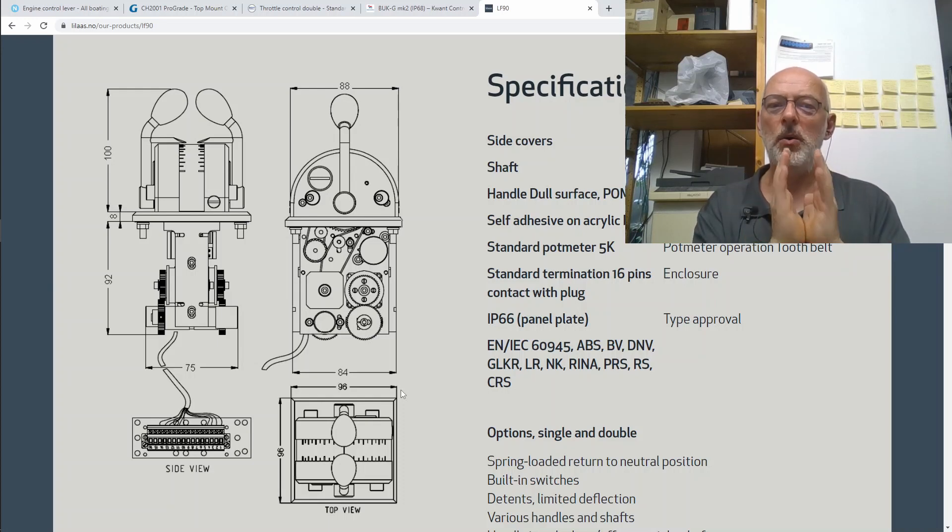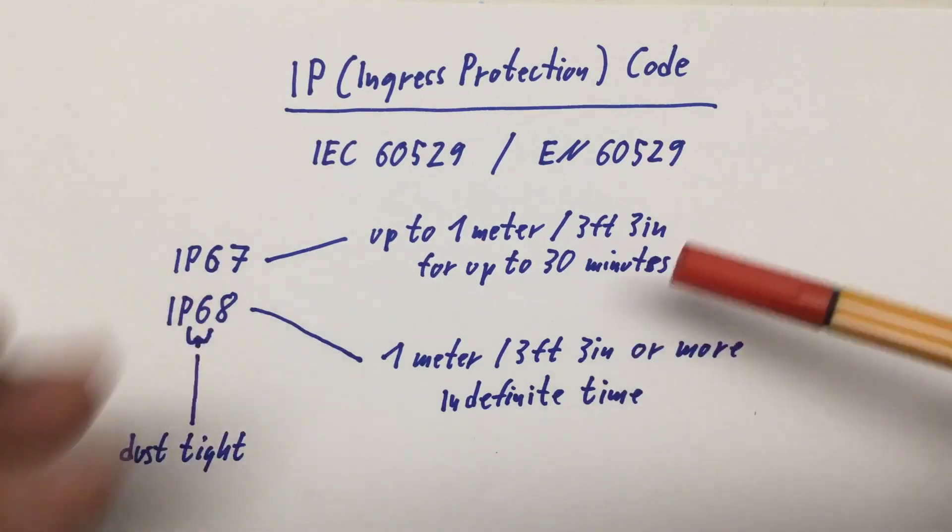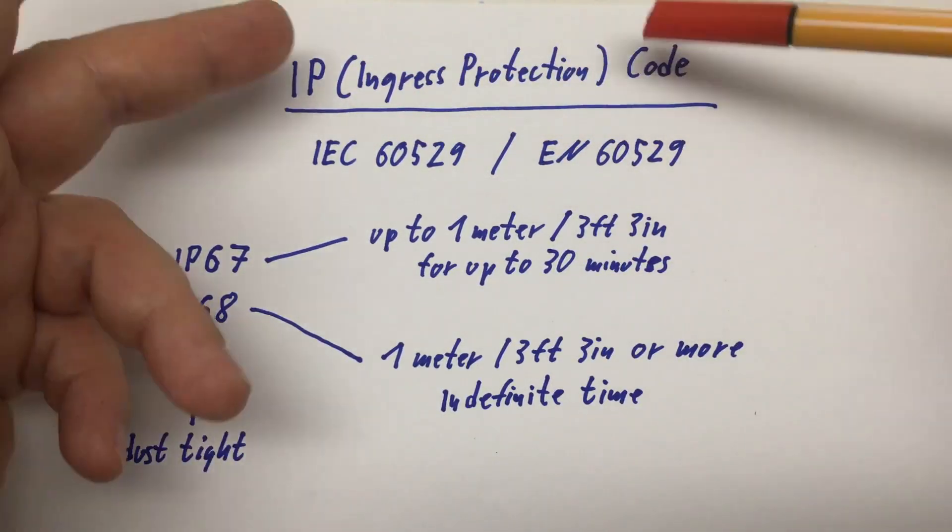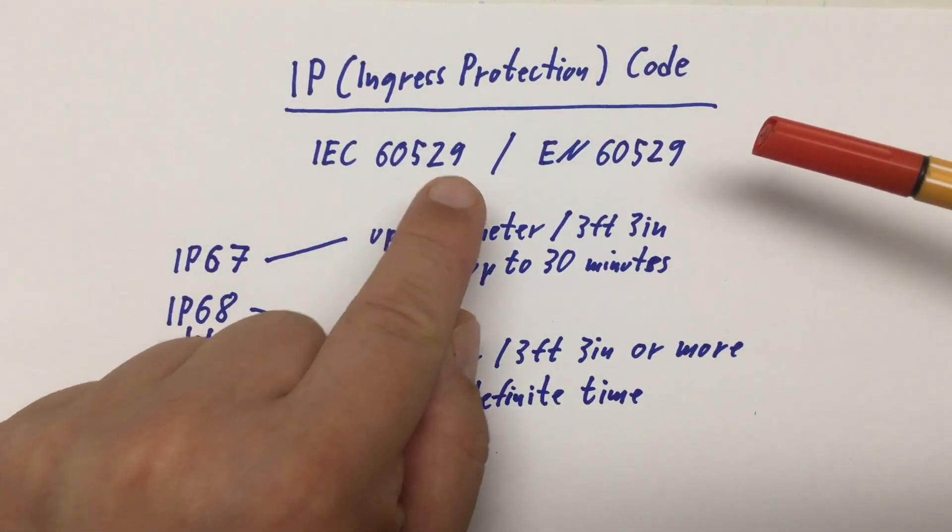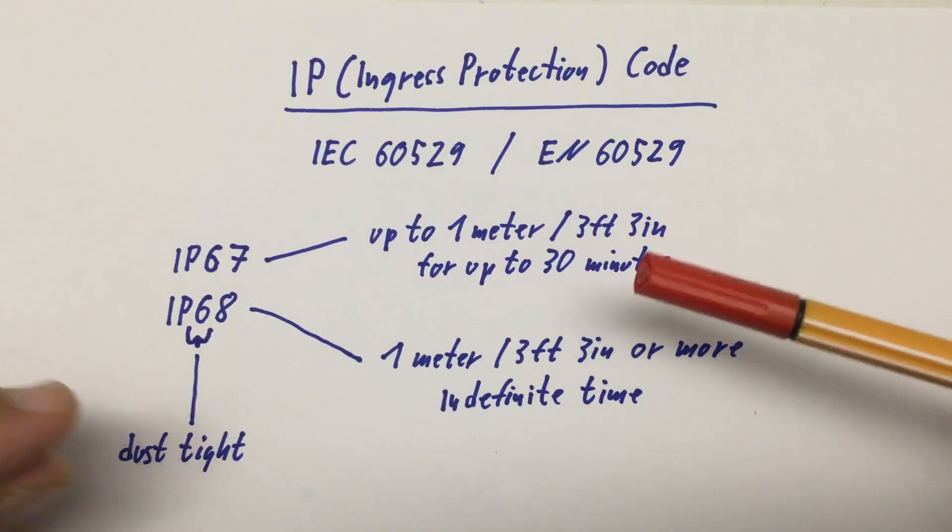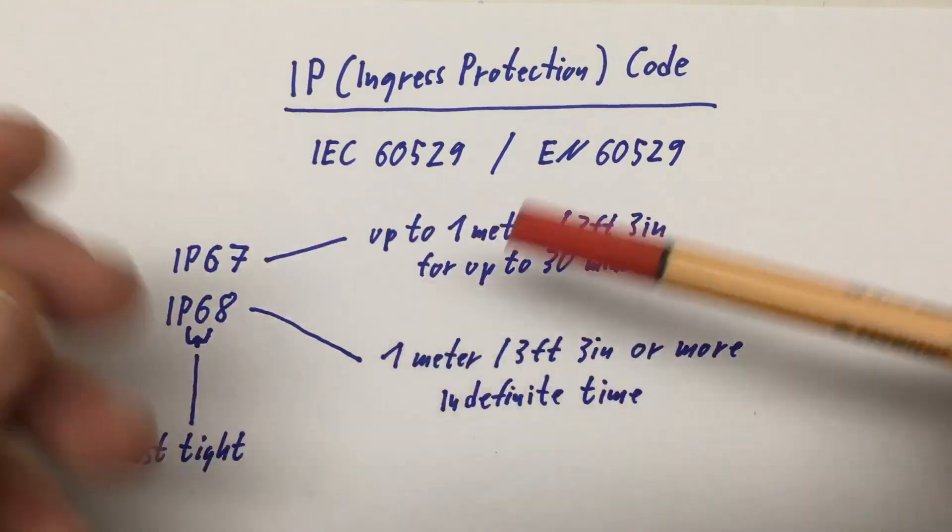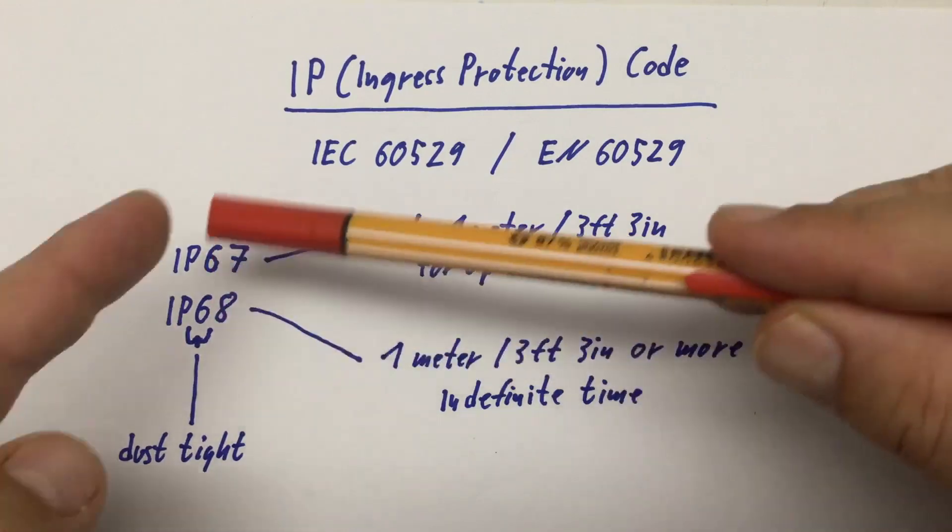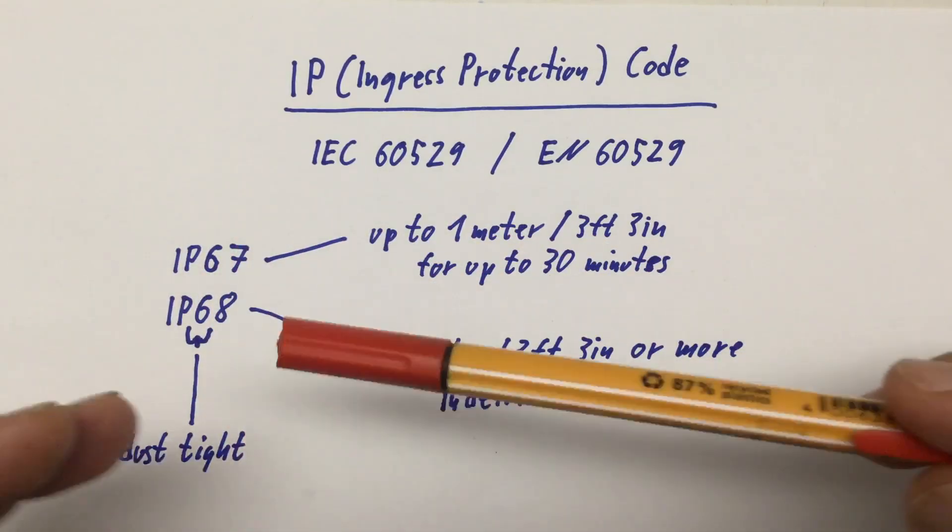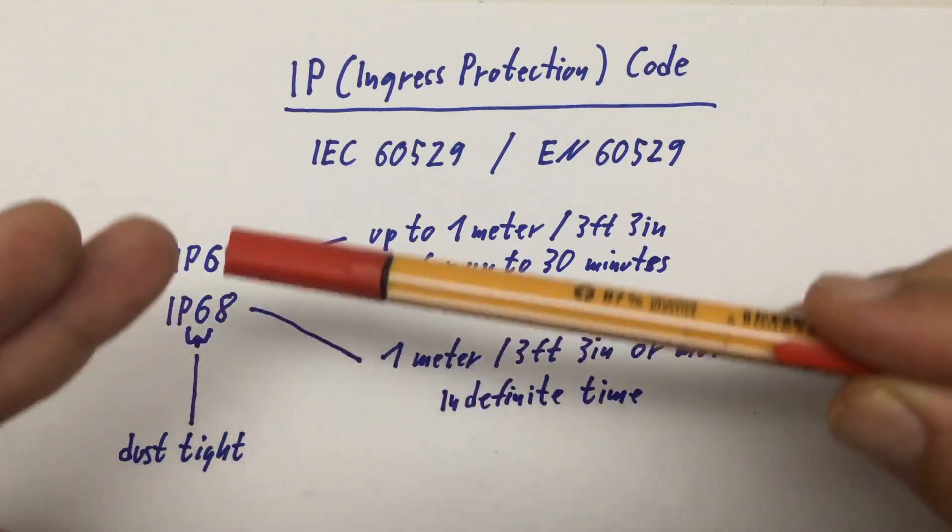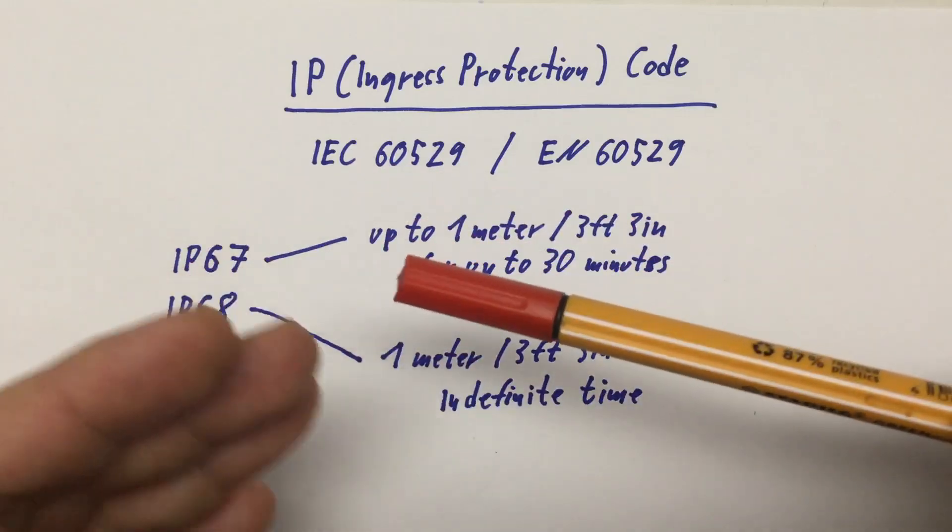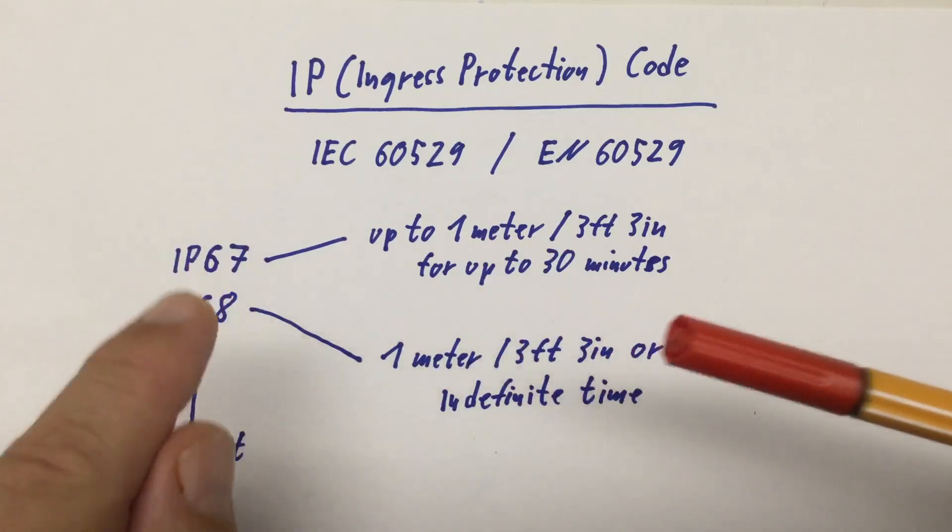Now I mentioned all the time IP68, but what does that really mean? IP stands for Ingress Protection code and it's standardized by IEC 60529 as well as the European norm 60529. I won't go through all the number codes. Sufficient to say that the first digit describes the ingress protection against solid objects - for example, a 2 would mean you can't put your finger into it, and a 6 means it's really dust tight, meaning there's absolutely no dust ingress even if there is a little vacuum inside your device. The second digit describes the protection against water ingress.